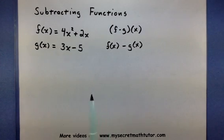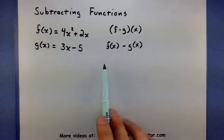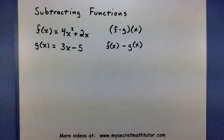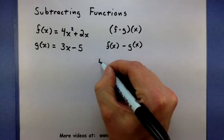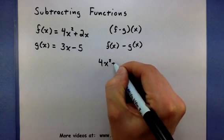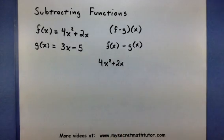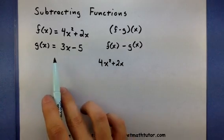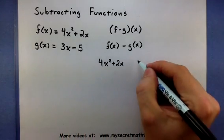I'm going to take the expressions for f and g and substitute them into this alternate form. Let's take the 4x squared plus 2x and put that in for f. Now we'll take the 3x minus 5 and we'll put that in for g.